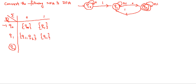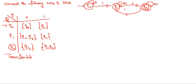What happens if you apply 0 on Q2 — you are going to Q2 only. What happens if you apply 1 on Q2 — you are going to Q2 as well as Q1, that means {Q1, Q2}. So this is the way of writing the transition table for the given NFA.